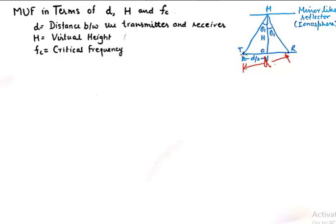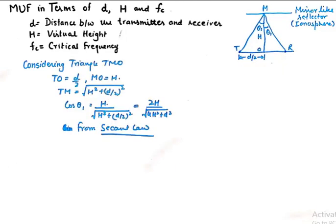We're going to take this triangle which is a right angle triangle. In the right angle triangle TMO, TO is d by 2, MO is the virtual height, and TM becomes equivalent to square root of H square plus d by 2 square. Cos of theta I will become H upon square root of H square plus d by 2 square, and a little bit of calculation gives me cos theta I to be this.